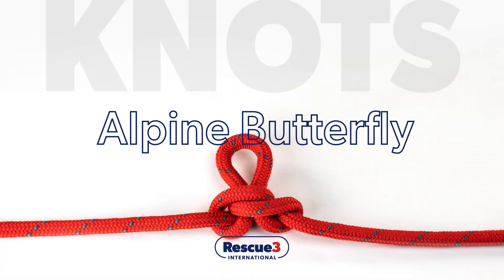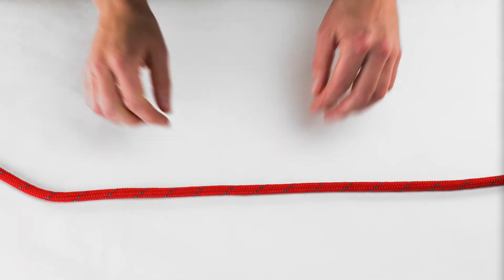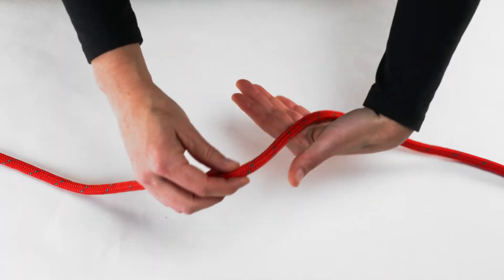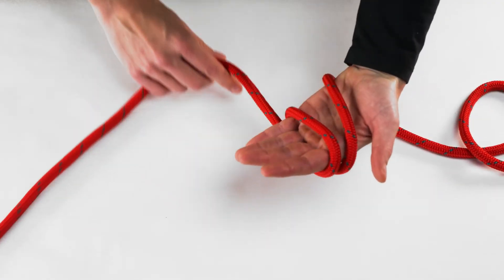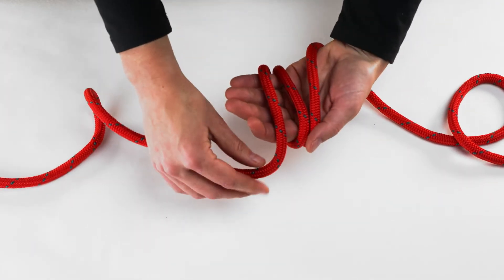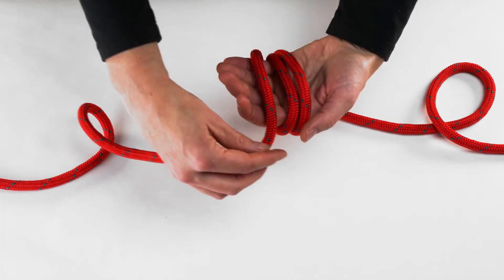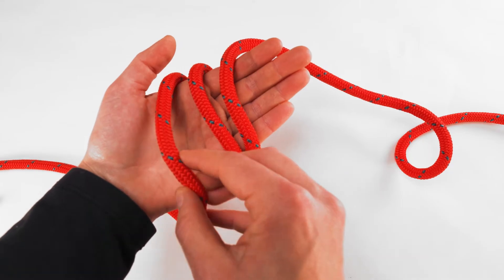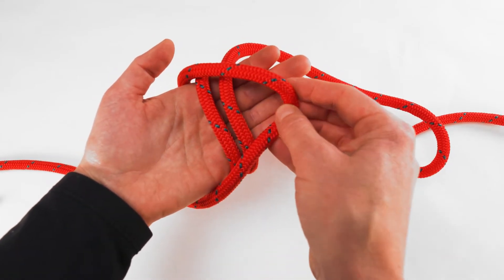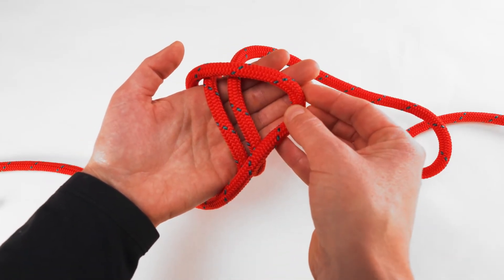Alpine butterfly. To tie the alpine butterfly, begin by wrapping the rope around the hand so that there are three strands in the palm. Take the strand nearest the thumb and move it to the fingertips, lifting it over the top of the other two strands.